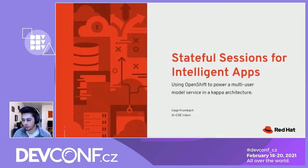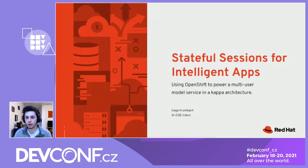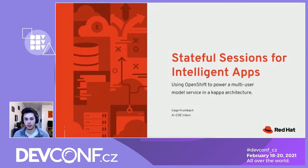Hi everybody. I'm Gage Crumbach, and I am an intern at Red Hat. I work in the Forward Deployed Engineering Group, and today I'm going to talk to you guys about stateful sessions for intelligent applications. Here we're going to be using OpenShift to power a multi-user model service in a Kappa architecture.